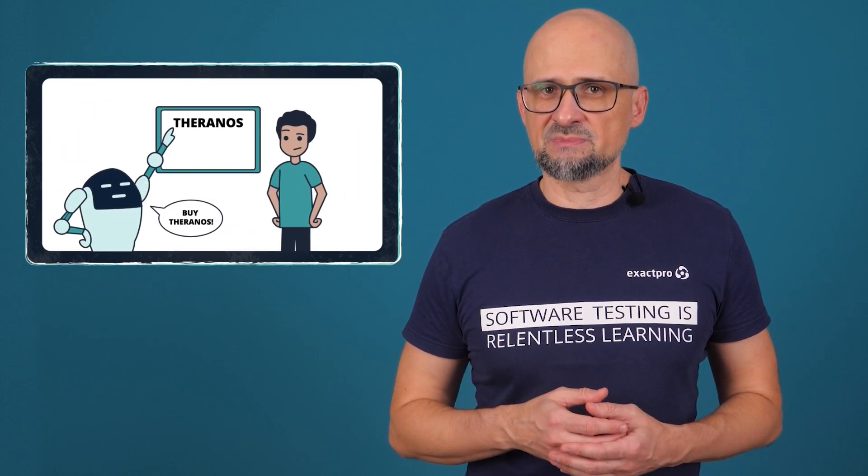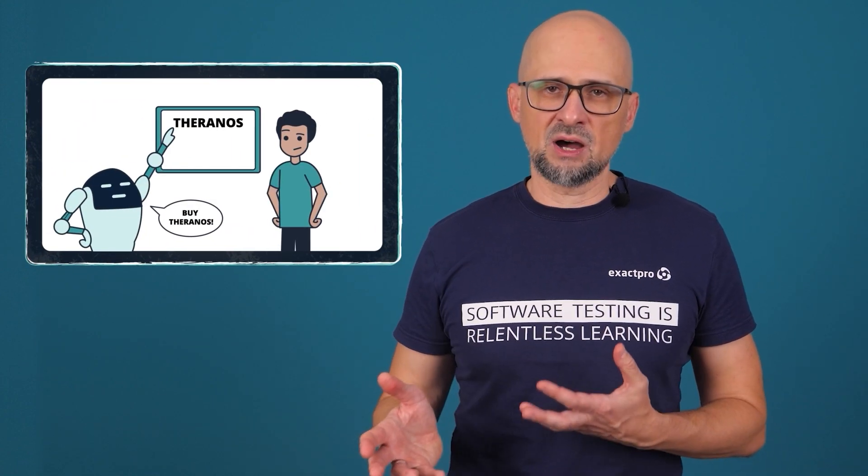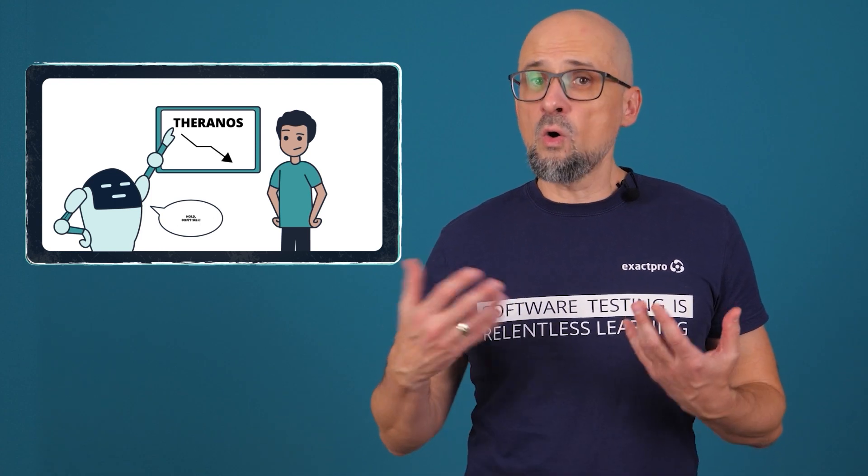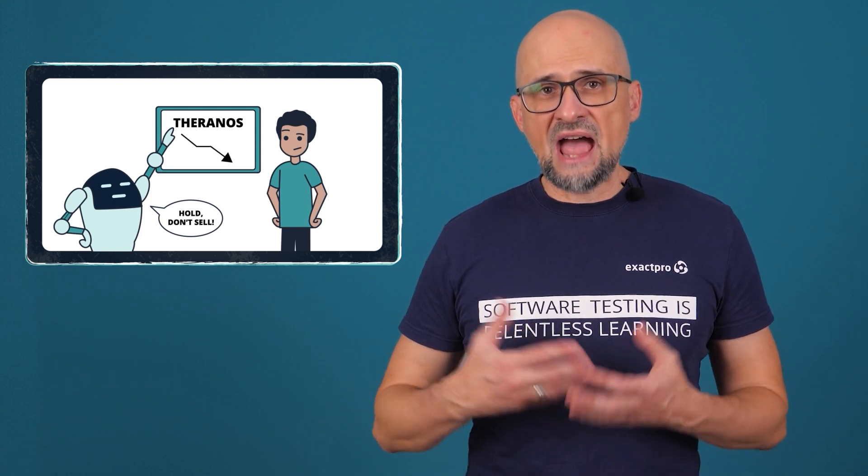Incorrect or insufficient test data, and therefore inadequate testing of the machine learning model, can lead to the system providing people with imprecise predictions. In addition, there is a tendency for humans to be too trusting of AI-based systems' decision-making. This misplaced trust may be called automation bias or complacency bias, and it takes two forms: accepting recommendations provided by the system without thinking about other sources, and overlooking failures due to the lack of adequate system monitoring.